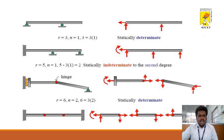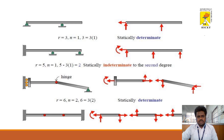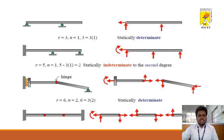In the second condition, the left-hand support is fixed, support number two is a roller, and support number three is also a roller. A fixed support provides three reactions: vertical, horizontal, and moment. Each roller support provides one reaction. So r = 5 and n = 1. Applying the formula: 5 minus 3 equals 2, so this is a statically indeterminate structure of second degree.